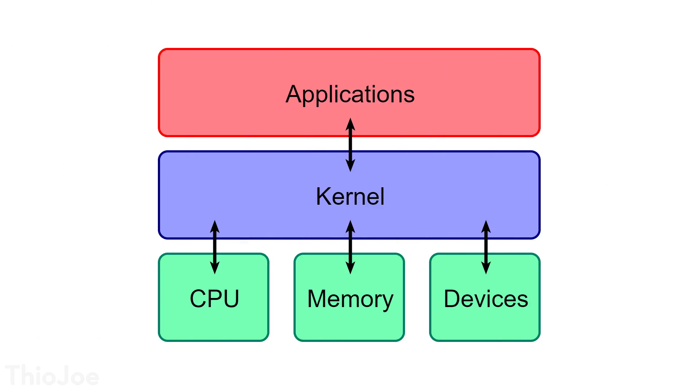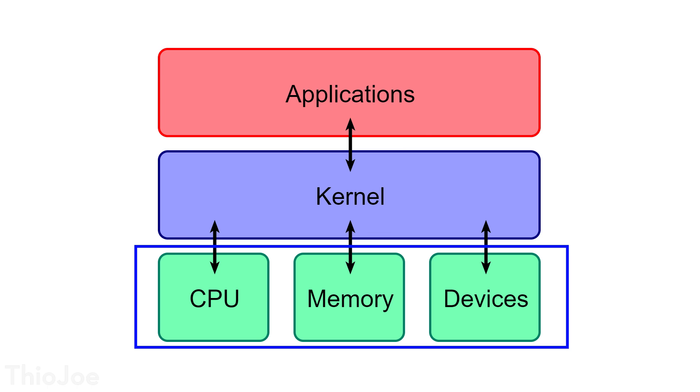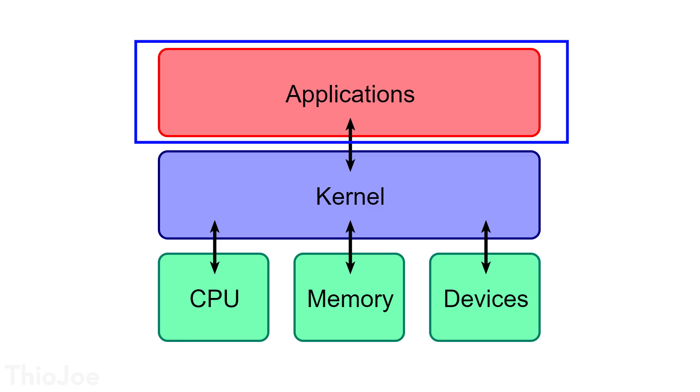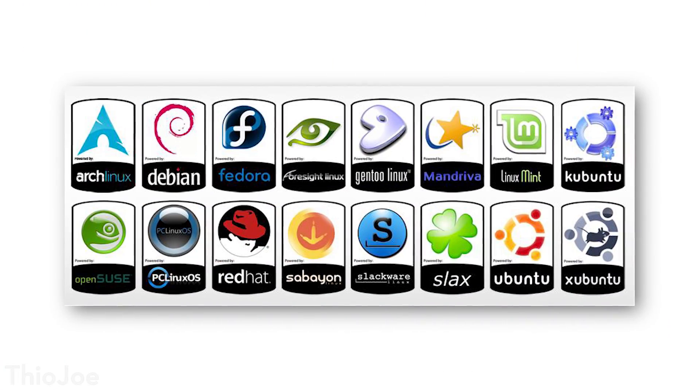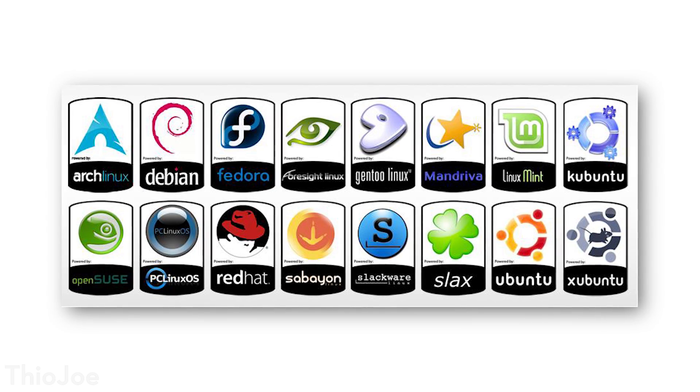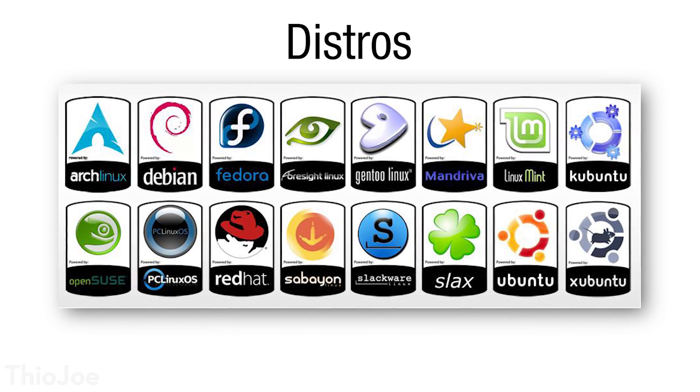If you have no idea what I'm talking about, let me explain. The kernel of an operating system is basically like its core. The kernel is what directly interacts with the hardware of the computer, such as the CPU and RAM, and allows them to interact with any applications. It's essentially the main bridge between the hardware and software. So any time a program is running on your computer, the kernel is what passes anything to and from the CPU so it can actually run. As you can imagine, there can be many varieties of Linux operating systems called distributions or distros, all using the same Linux kernel.